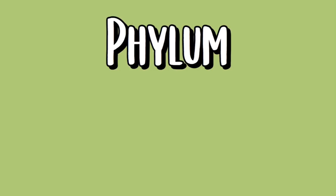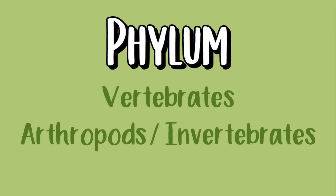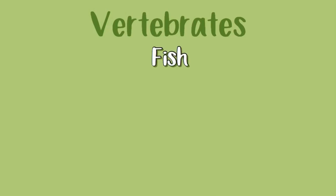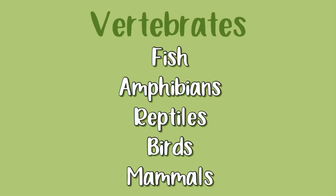Moving on to the next classification level, which is the phylum. It is divided into vertebrates and arthropods, or invertebrates. There are five types of vertebrates and they are fish, amphibians, reptiles, birds and mammals.